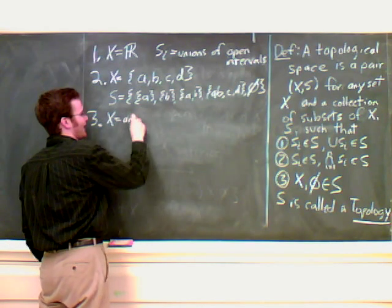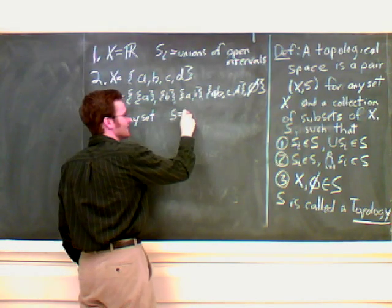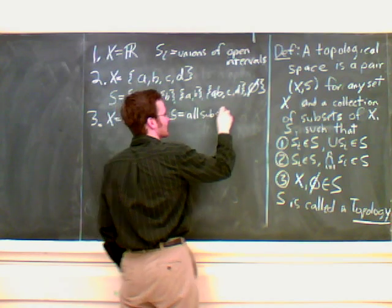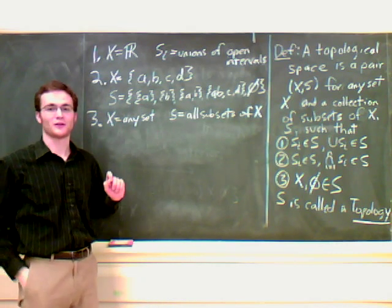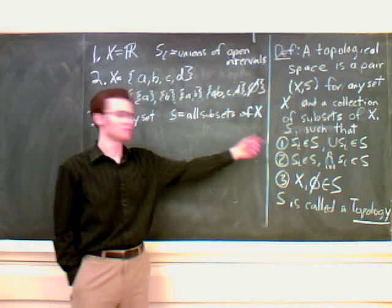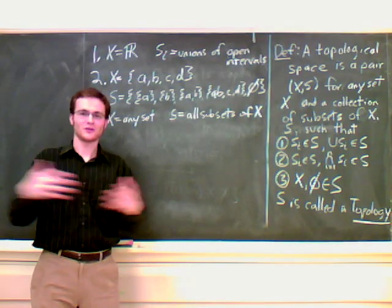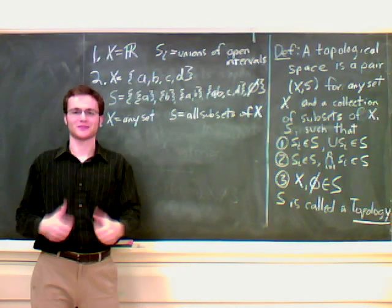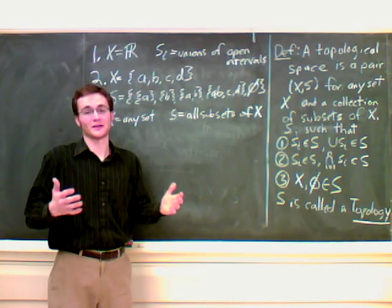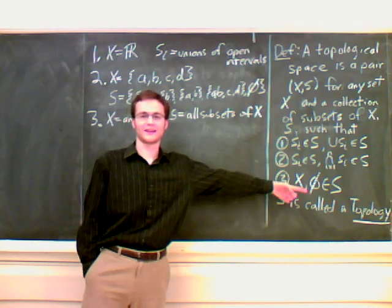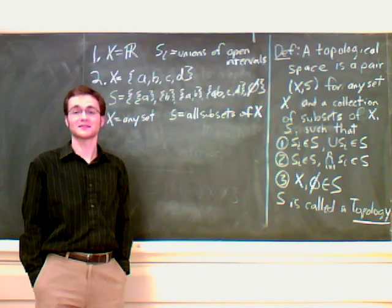Let's go to the third example. Here, we set X equal to any set we want, and S is all subsets of X. Let's make sure this follows these three properties. One, unions. If we take any subset and we union them together, put them together, it's still going to be a subset, so we're good. Same thing with intersections. If you take a number of subsets and you take their intersection, it's still going to be a subset, so we're fine. And the third one, everything and the empty set are subsets of X, and so they're also in our topology. So S is a topology.